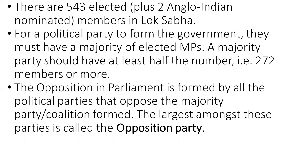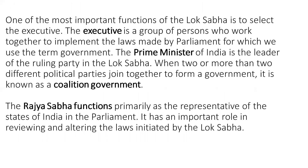This means the government sitting at the centre must have 272 or more elected members in the parliament, and thus they become the central government. The opposition in parliament is formed by all the political parties that oppose the majority party or coalition formed. The largest among these parties is called the opposition party. One of the most important functions of the Lok Sabha is to select the executive. The executive is a group of persons who work together to implement the laws made by the parliament, which we refer to as the government. The Prime Minister of India is the leader of the ruling party in the Lok Sabha. When two or more different political parties join together to form a government, it is known as a coalition government.